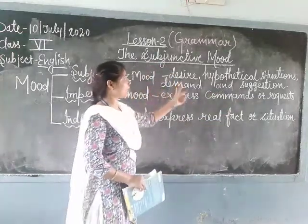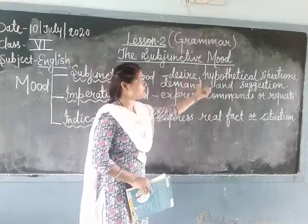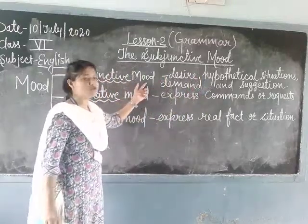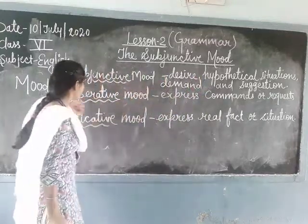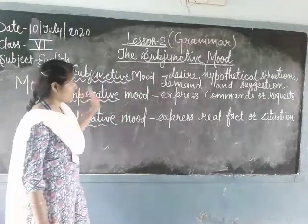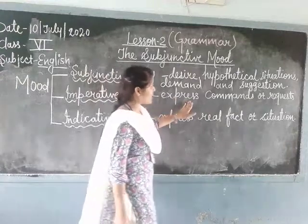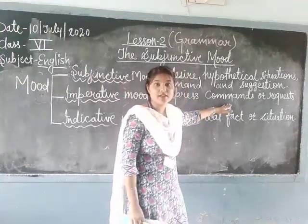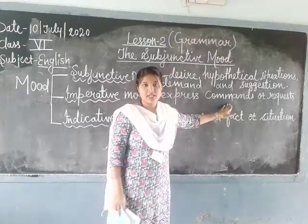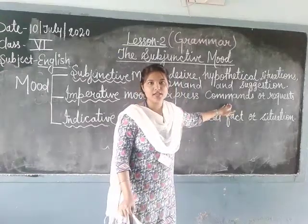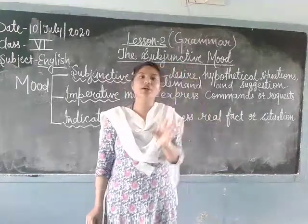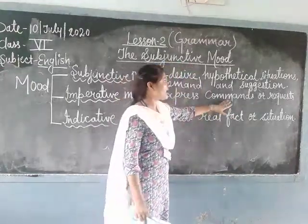So if any of these things — desire, hypothetical situation, demand, or suggestion — are mentioned or identified in your sentence, then that sentence belongs to subjunctive mood. Now, come to the imperative mood. How do we recognize an imperative mood sentence? Imperative mood expresses commands — commands mean orders. For example: 'Don't go outside,' 'Sit to your place,' 'Keep quiet.' These are orders that teachers or parents give.